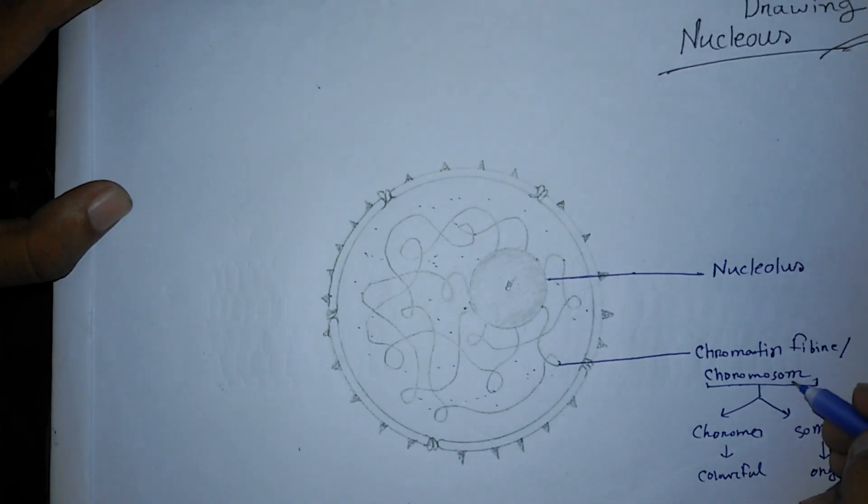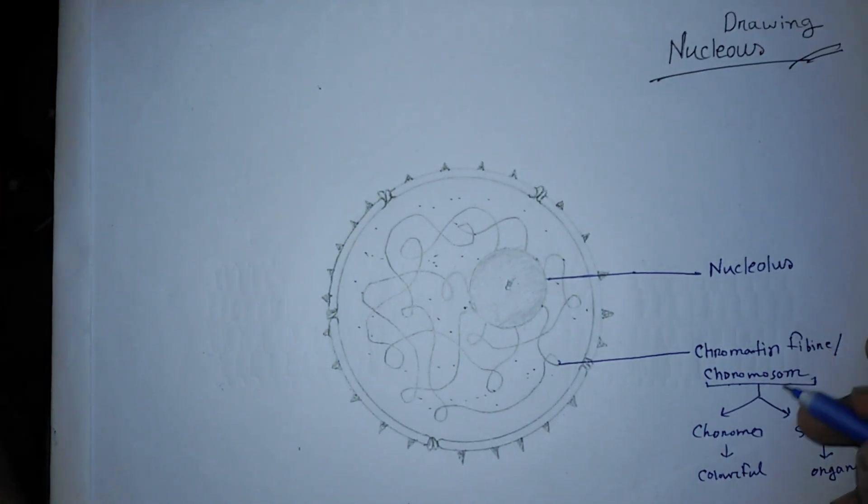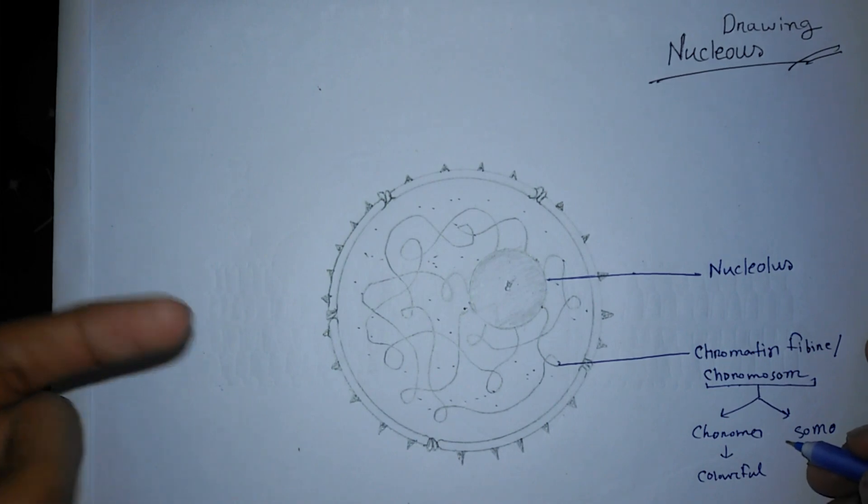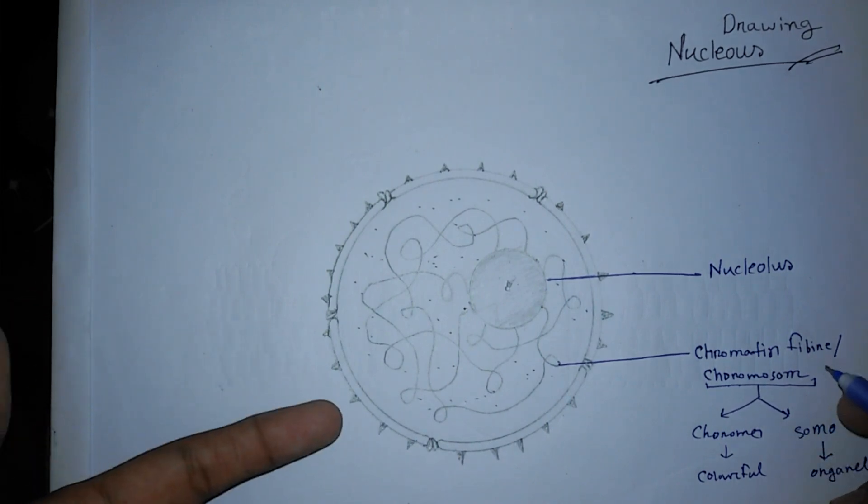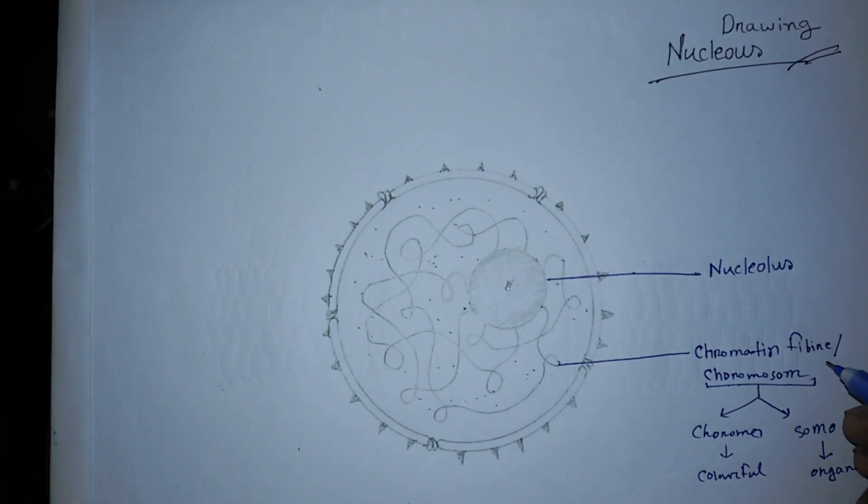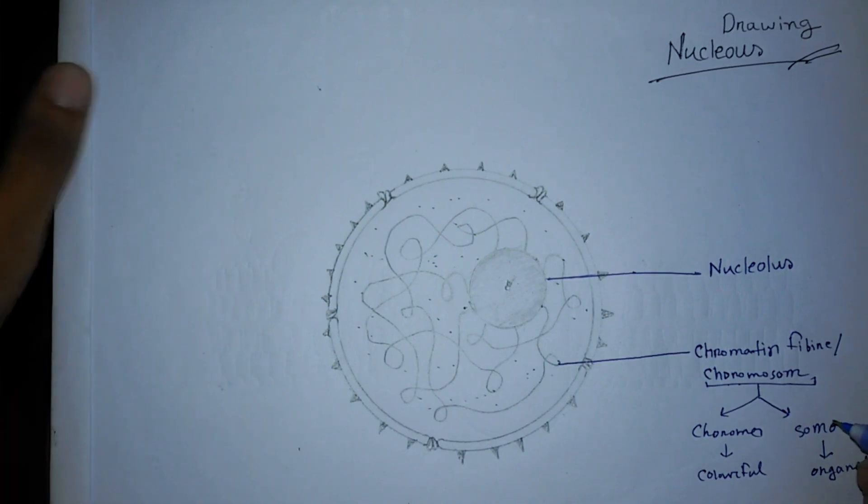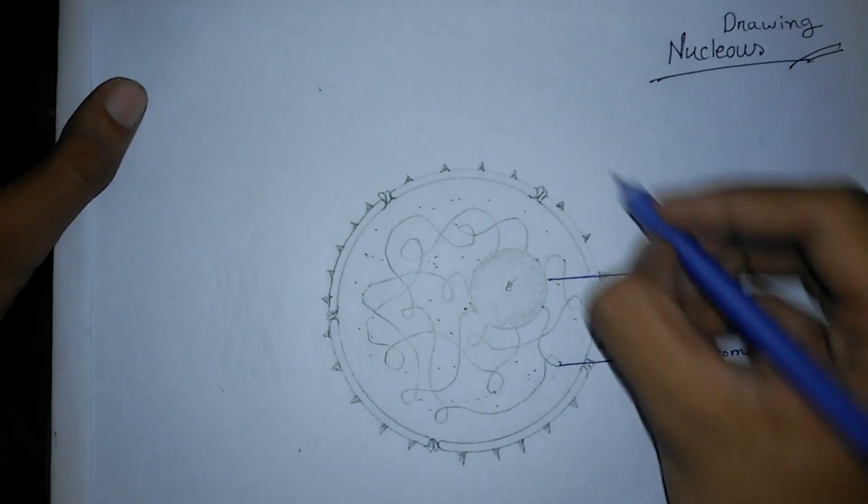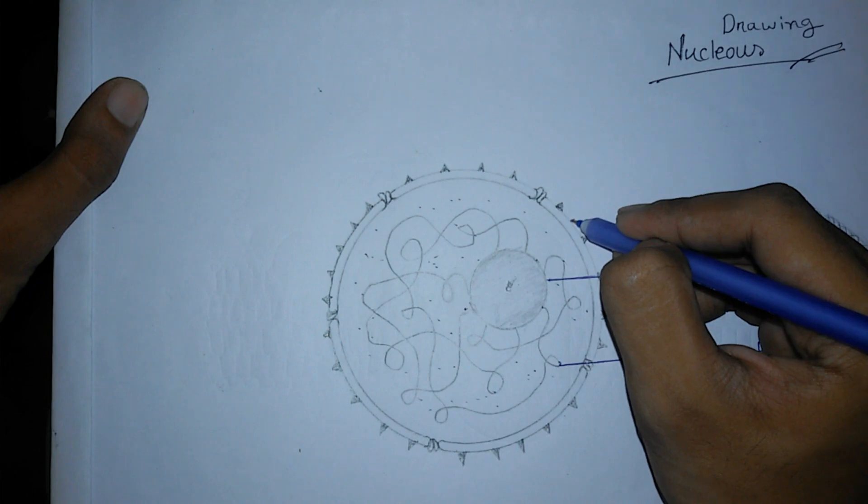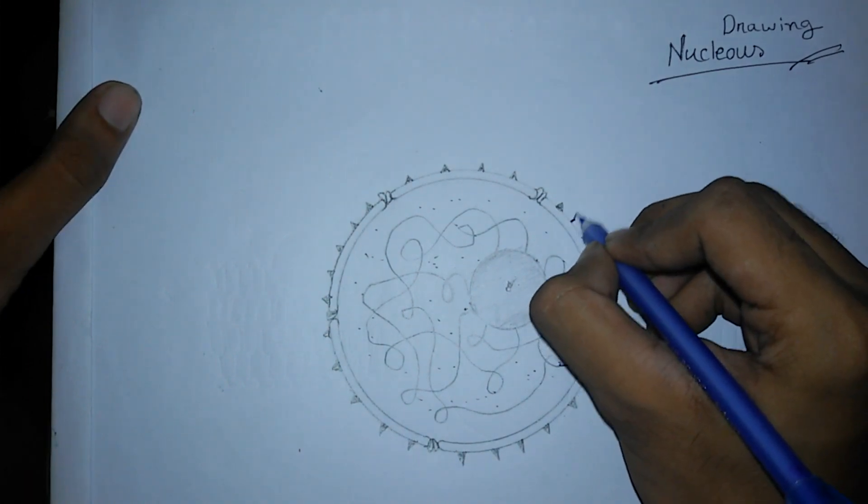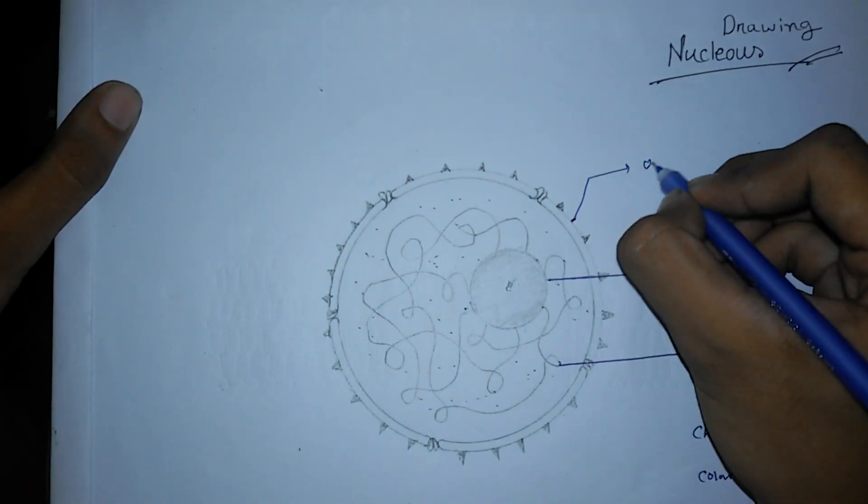This is called the colorful organelle because scientists first saw these chromatin fibers in color, which is why it's called chromosome. Then this is the nuclear membrane, which has two parts: outer membrane and inner membrane.